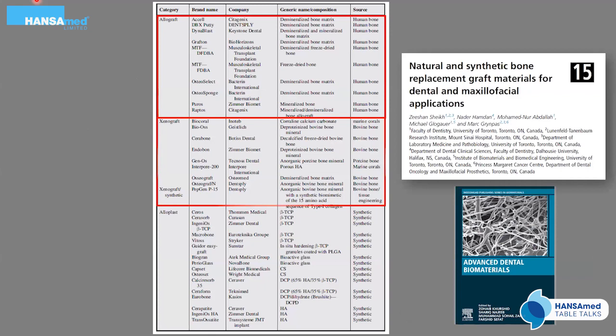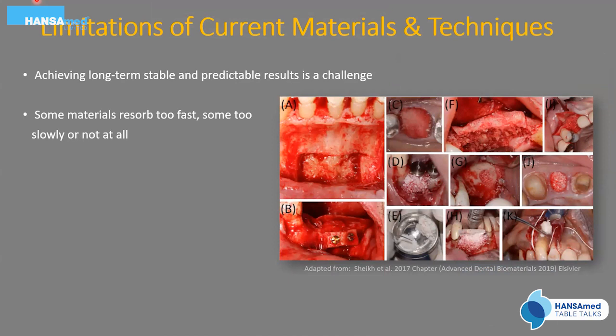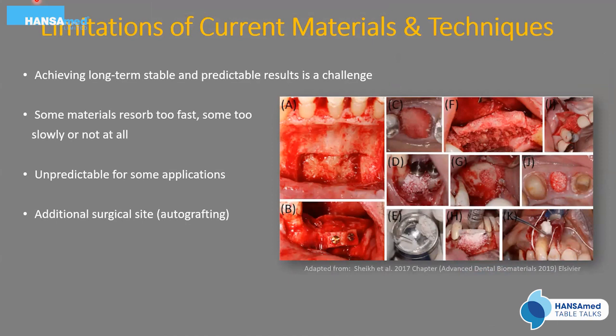These are some of the allografts, xenografts, and alloplasts available on the market from different companies with different brand names, but categorizable into these three basic categories. Limitations of current materials and techniques include: difficulty achieving long-term stable and predictable results; some materials resorb too fast, some too slowly, some not at all; they are unpredictable for some applications; additional surgical sites are required for autografting, resulting in trauma, pain, and morbidity. There is a need to focus on biology to optimize clinical outcomes.